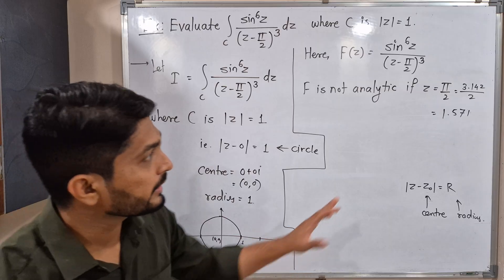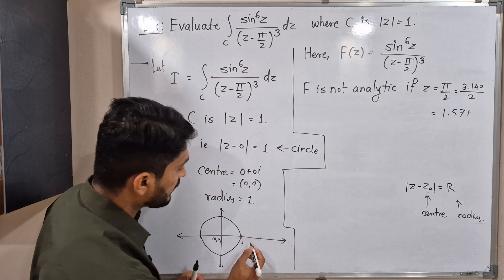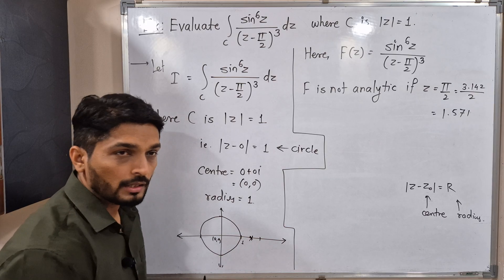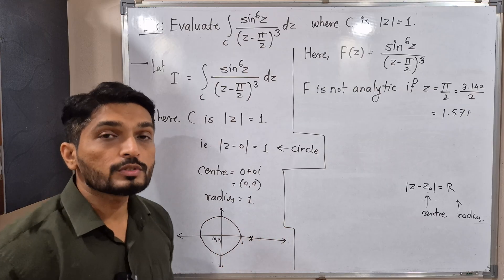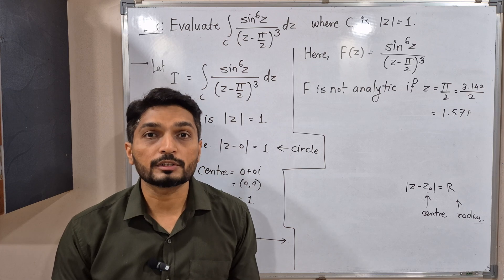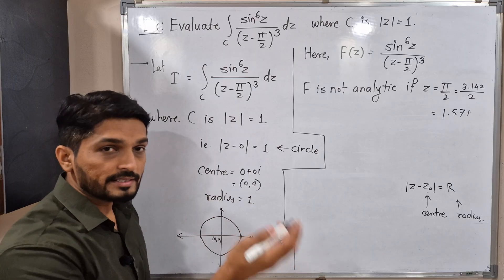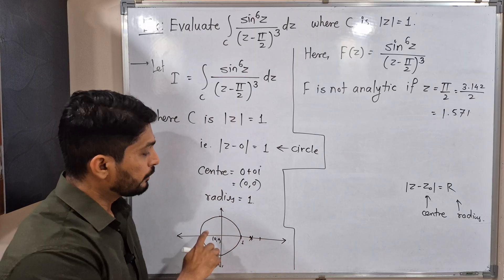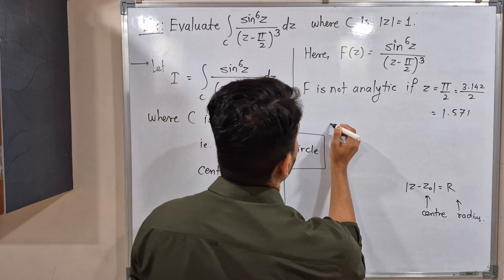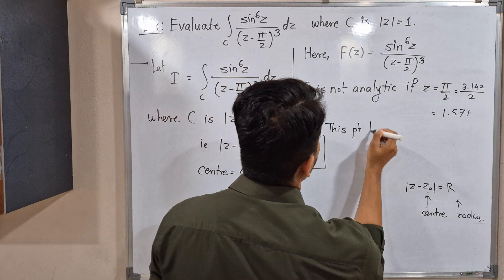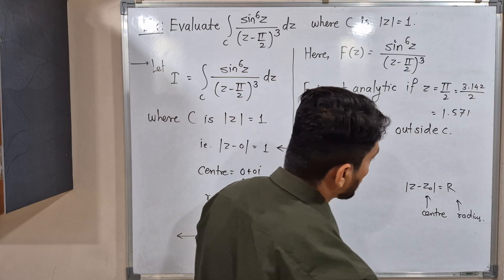There's only one point, just the cube. This is the point where the function is not analytic—that means it is a singular point. Now our next task is to check whether that point lies inside the circle or outside. See, 1.57 approximately 1.5—where would that be? 1.5 is real, so it will be on the real axis. It has only one singular point, which lies outside.